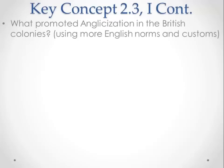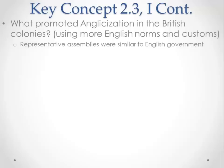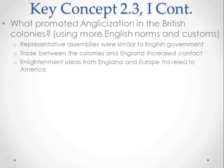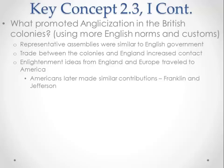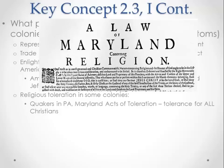What promoted Anglicization — becoming more British, using more English norms and customs? Representative assemblies were similar to English government. Trade between the colonies and England increased contact. Enlightenment ideas from England and Europe traveled to America, and Americans later made contributions including Benjamin Franklin, Thomas Jefferson, and Thomas Paine. Religious toleration in some colonies began to develop: Quakers in Pennsylvania were tolerant of everybody. The Maryland Acts of Toleration granted religious toleration for Christians only — for example, Jewish people in Maryland could be put to death under those acts.